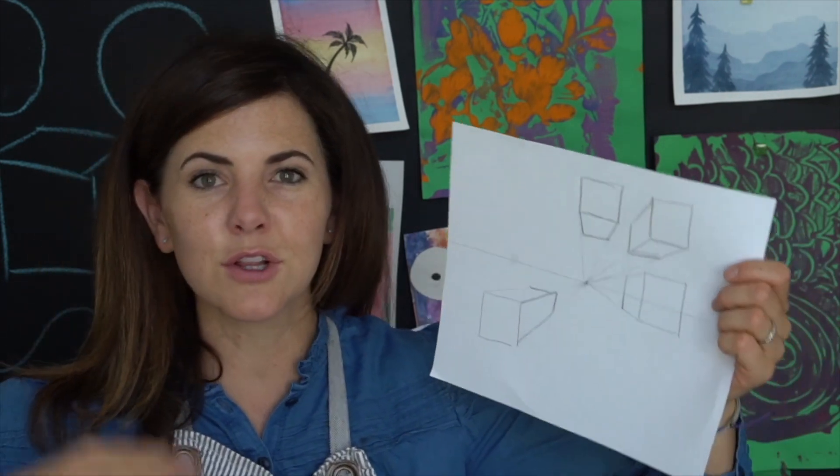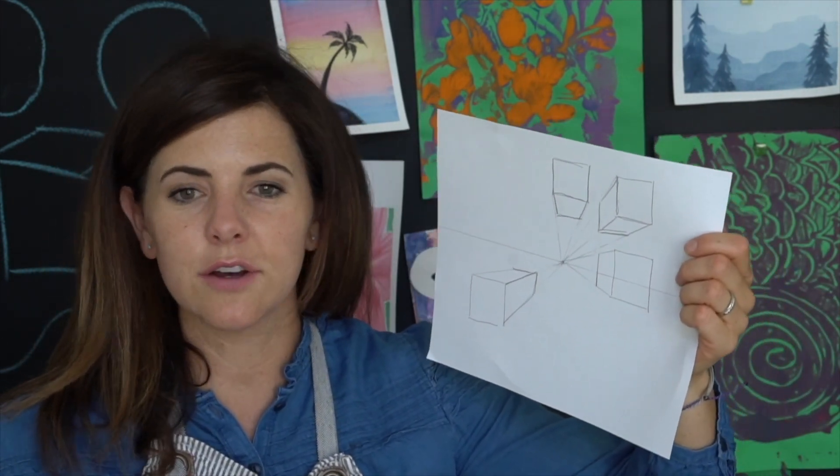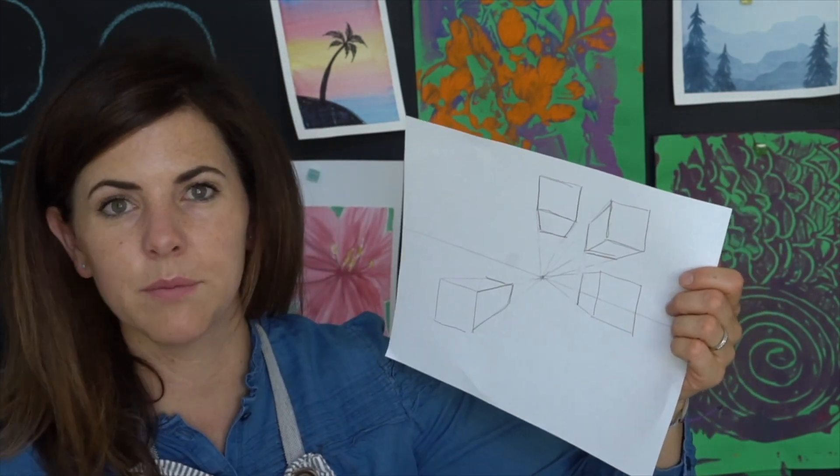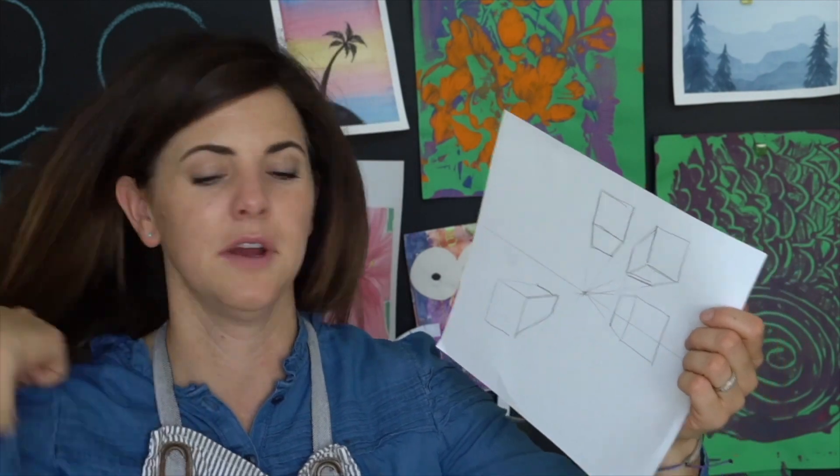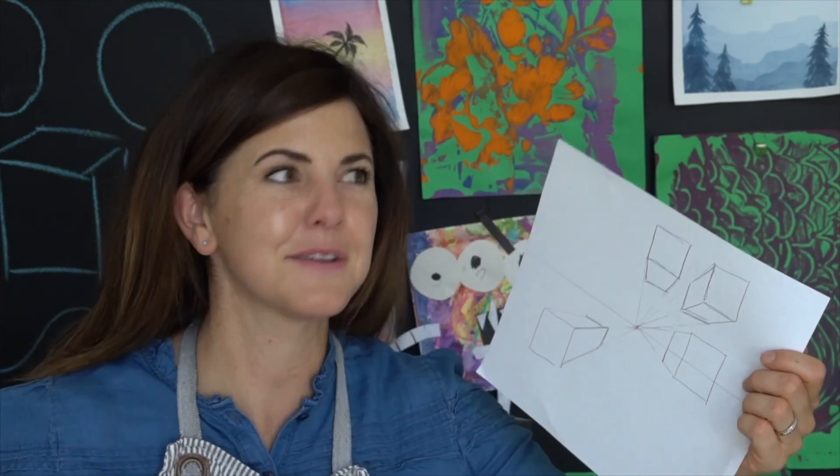Perspective is really cool because it gives you an illusion of space. An illusion means it makes it look like maybe this block is coming out of the paper, but it's not really. It's like a trick that tricks people's eyes.